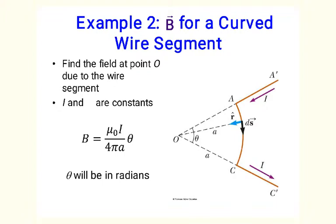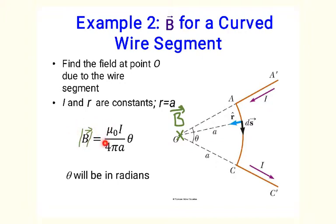Another easy configuration to calculate is a thin wire with current I that is curved as an arc AC of a circle of radius a that subtends an angle theta. Let us find the magnetic field at point O due to the curved wire segment only. Again, we break the whole wire into small elements ds. The distance from each element ds to point O, called R, is the same for all elements — it is simply equal to the radius a of the circle. By the right-hand rule, B points into the screen at point O. The magnitude of B equals mu_0 times I multiplied by the angle theta divided by 4 pi a, where theta must be in radians.